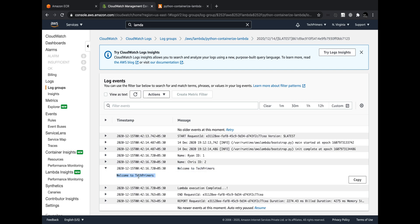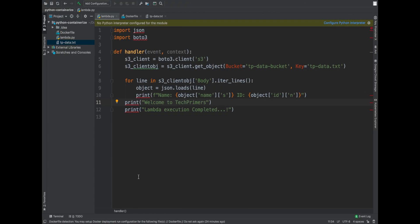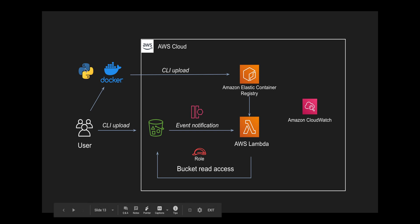To summarize: we created a Python program that reads an S3 file and prints extracted JSON fields, containerized it using Docker with the AWS Lambda Python base image, uploaded the image to ECR using the CLI, created an AWS Lambda function using the container image option, configured an S3 trigger, created the S3 bucket, assigned the S3 read policy to the Lambda role, uploaded a file to S3, and monitored the output in CloudWatch. This is a kickstarter for using ECR with Lambda containers.